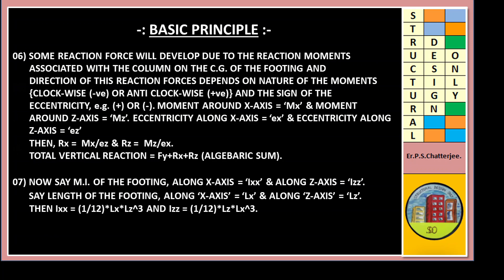Now say moment of inertia of footing along X-axis IXX and along Z-axis IZZ. The length of the footing along X-axis LX and along Z-axis LZ. Then IXX equals 1/12 LX times LZ cubed, and IZZ equals 1/12 LZ times LX cubed.